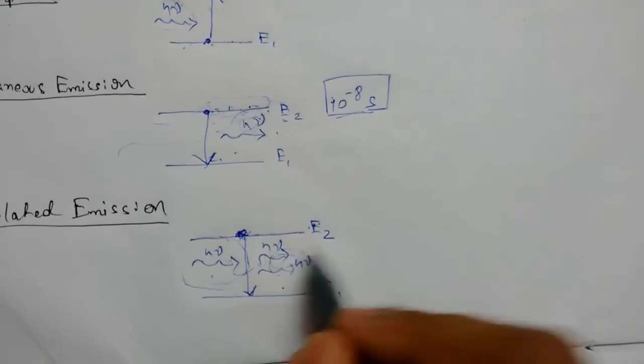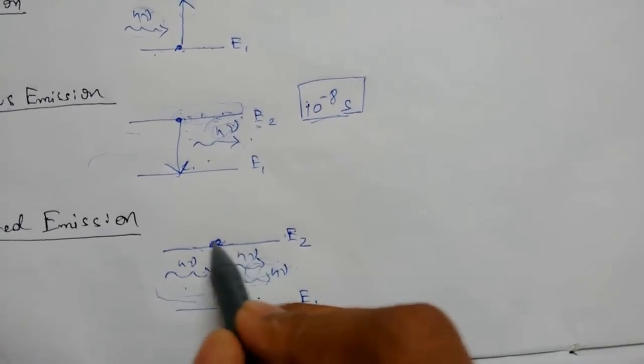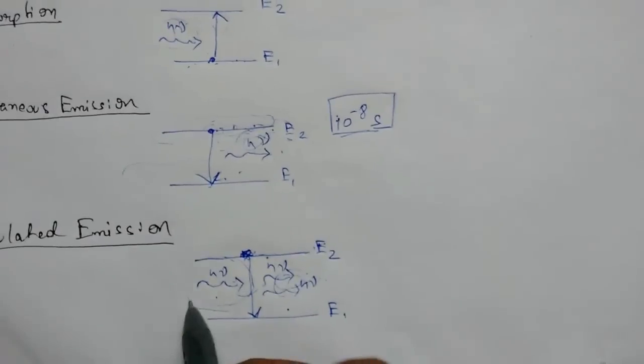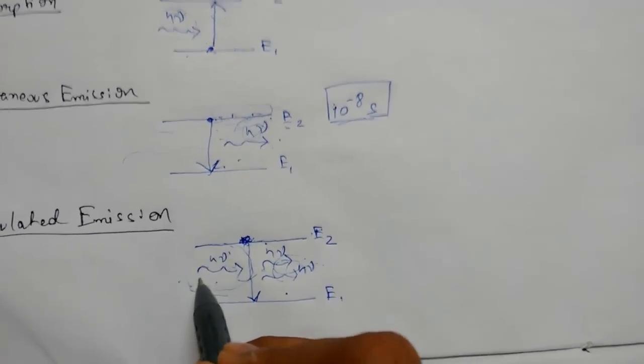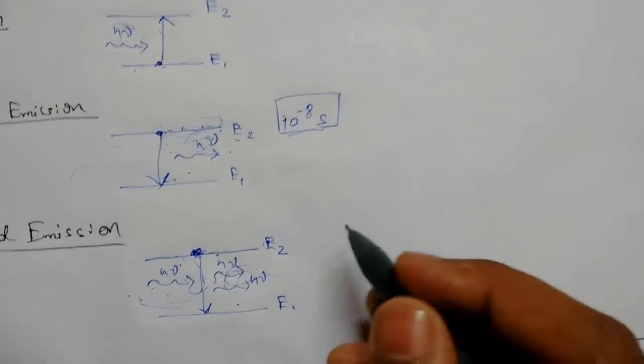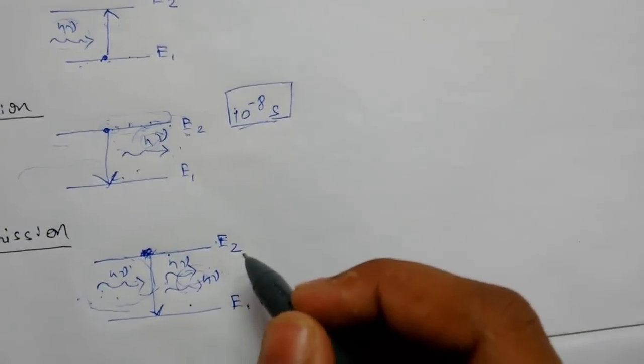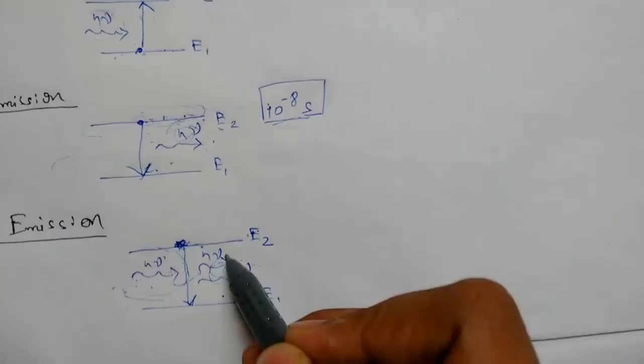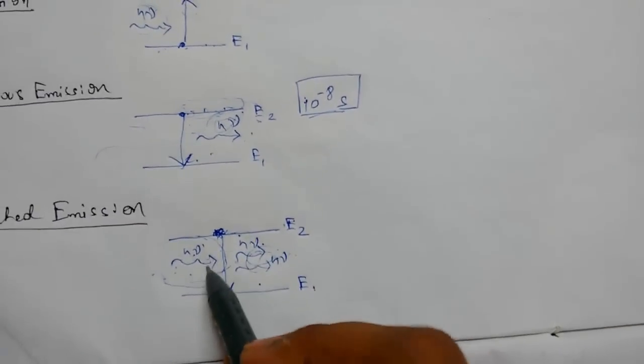The probability of stimulated emission is proportional to the number of atoms present and the intensity of light or energy of photon. The direction of propagation, energy phase, and state of polarization is exactly the same as that of the stimulating photon.